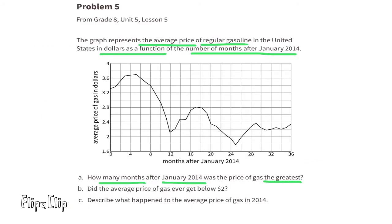Problem number 5 from 8th grade Unit 5, Lesson 5: the graph represents the average price of regular gasoline in the United States in dollars as a function of the number of months after January 2014. Part A: how many months after January 2014 was the price of gas the greatest? Five months after January 2014, the price of gas was the greatest.